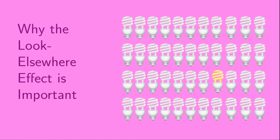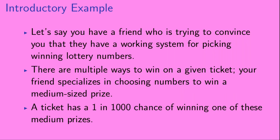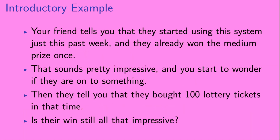Welcome to 'Why the Look Elsewhere Effect is Important.' Let's say you have a friend who is trying to convince you that they have a working system for picking winning lottery numbers. There are multiple ways to win on a given ticket. Your friend specializes in choosing numbers to win a medium-sized prize. A ticket has a one in a thousand chance of winning one of these medium prizes. Your friend tells you that they started using this system just this past week and they already won the medium prize once. That sounds pretty impressive, and you start to wonder if they are on to something.